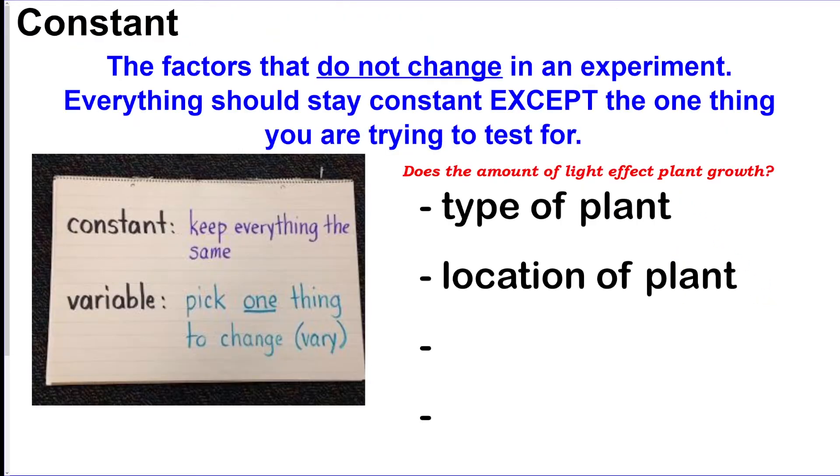Constants: these are things within the experiment that never change. So we were talking about this before. If this was the problem statement, does the amount of light affect plant growth, the only thing you are changing is the amount of light, so that's going to be the independent variable. The plant growth here is going to be the dependent variable because that's what you're measuring. Constants are anything that's going to stay the same in those two experiments.